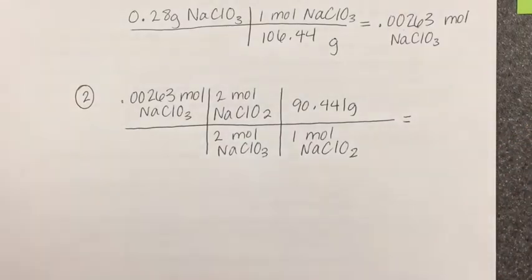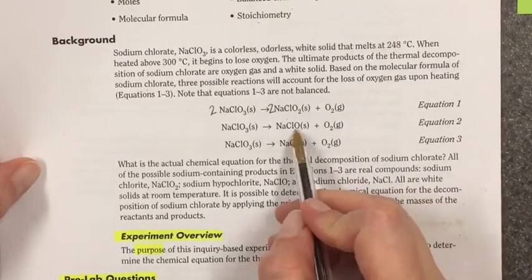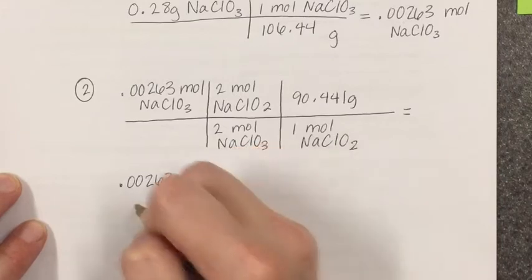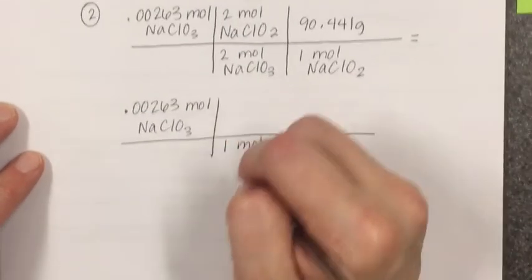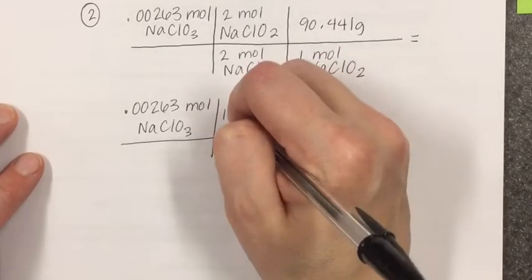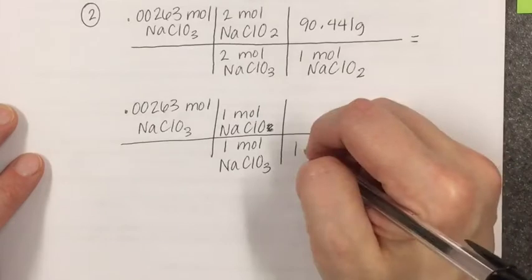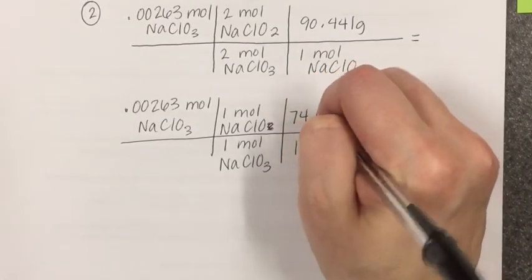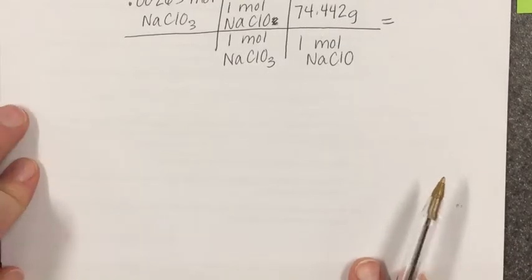I would repeat that for equation two. So, if we look at equation two, the solid product was sodium hypochlorite. So, NaClO. I would repeat the same thing, starting with the same number of moles. But for every one mole, there's a one to one mole ratio of NaClO3 we start with, we're producing one mole of NaClO. So, one mole of NaClO has a mass of 74.442 grams. That'll give us the expected mass of product using equation two. And then I do it again, using the data from equation three.